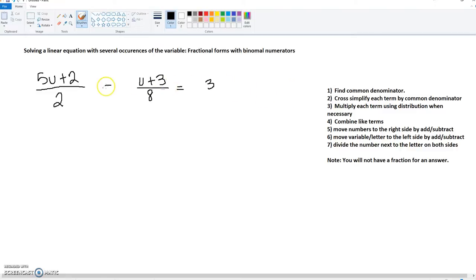In this case we have 2 and 8. If you do not see that 8 is the common denominator, you can just multiply them together. So you can take 2 times 8, which gets 16.